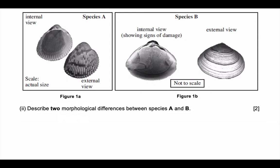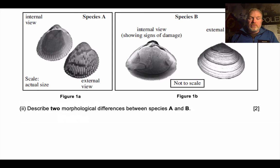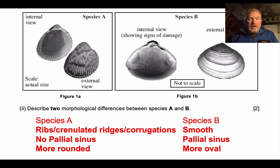The second question asks you to describe two morphological differences between these species. You can pick any of these. Species A has got ribs or crenulations — corrugations might be a better way of thinking about it — on its shell. Species B is smooth on its surface. There's one mark for picking those out, and another mark for talking about the palleal sinus.